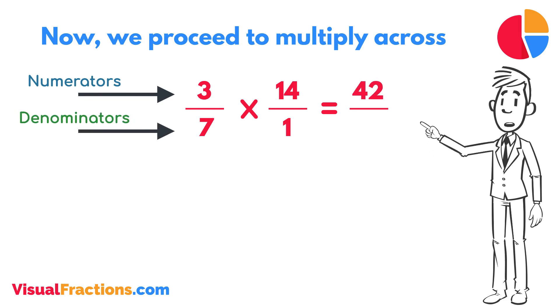Next, multiply the denominators, 1 times 7 equals 7. We now have a new fraction, 42 7ths.